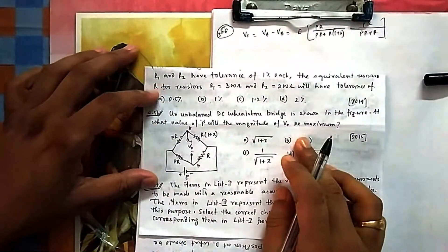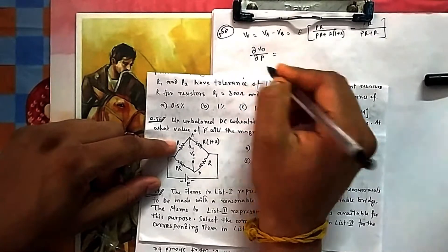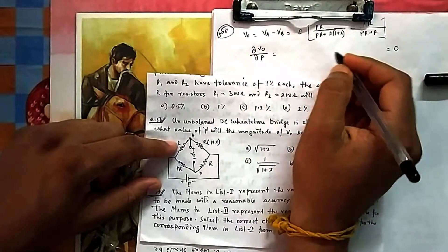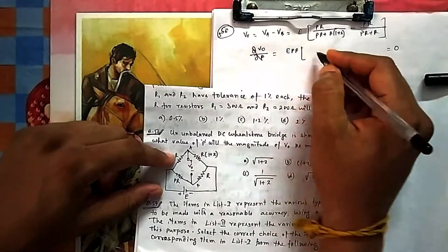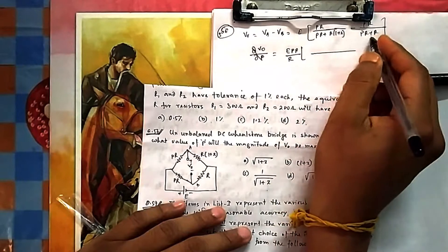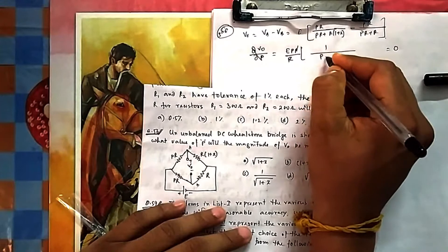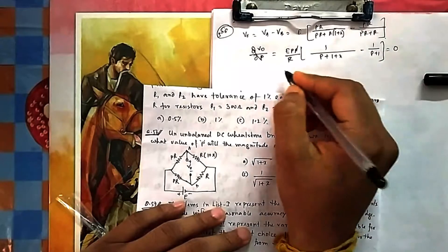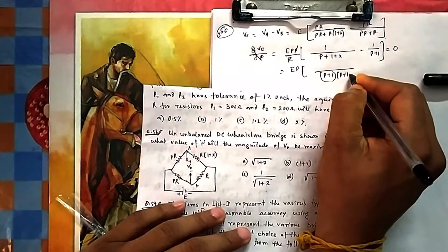To maximize V0 by changing p, differentiate V0 with respect to p and set it to zero. Taking E as constant outside and cancelling R common from numerator and denominator, it simplifies to 1/(p+1) + x minus 1/(p+1). Multiplying through by E·p gives (p+1)(p+1+x) minus (p+1) minus x terms.